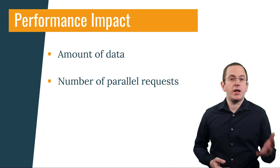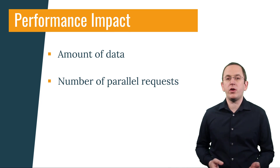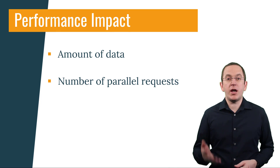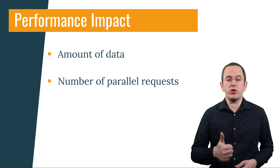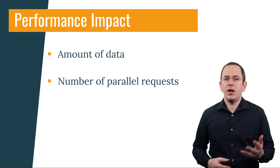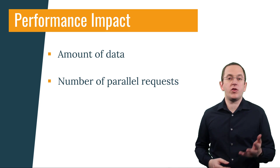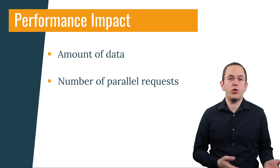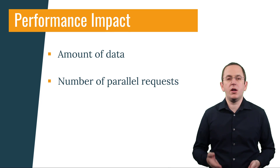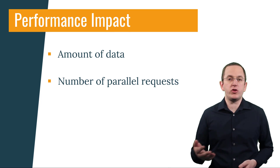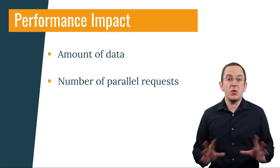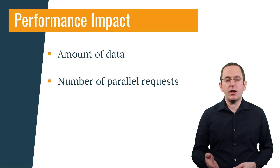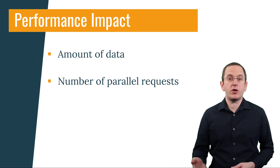For example, you can handle multiple associations that never contain more than three elements very inefficiently without experiencing any performance issues. But you can't do that with one association that references thousands of records. Or if you're building an in-house application used by only 20 users simultaneously, you can easily use features like Hibernate's formula annotation to improve your development speed. But if you do that in a web-scale application, the generated SQL statement's complexity will most likely cause performance issues. These examples show that you need to analyze how your persistence layer performs in a production scenario.